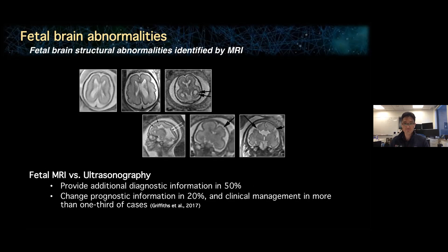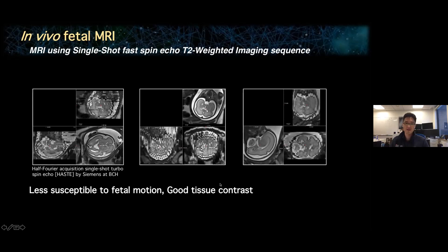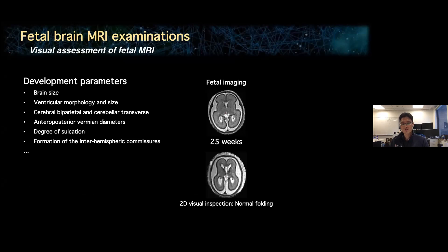MRI of the fetus in utero is difficult because of unpredictable and extreme fetal movement. Currently, single-shot fast spin echo T2-weighted imaging is the most common technique for fetal structural MRI because it is less susceptible to fetal motion and shows relatively good tissue contrast. But there are still motion artifacts between slices, so to get better diagnostic images it is often necessary to acquire multiple images in different axial, coronal, and sagittal views. From fetal MRI, it is important to check key fetal brain metrics, but brain structural changes are often too small to be detected by visual assessment alone.